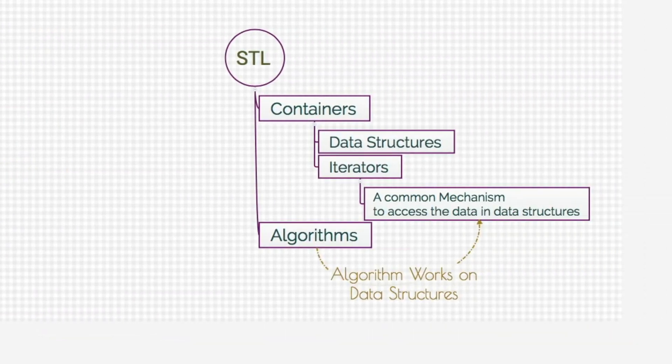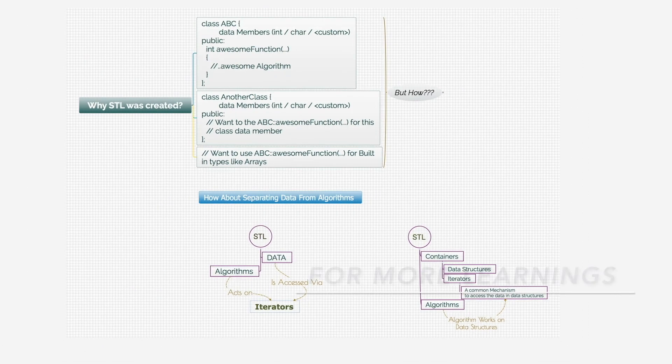So what is STL? STL consists of containers which contain the data in form of data structures and iterators, as well as algorithms which act on iterators. So that's the way STL works and that's the reason for which STL was created.